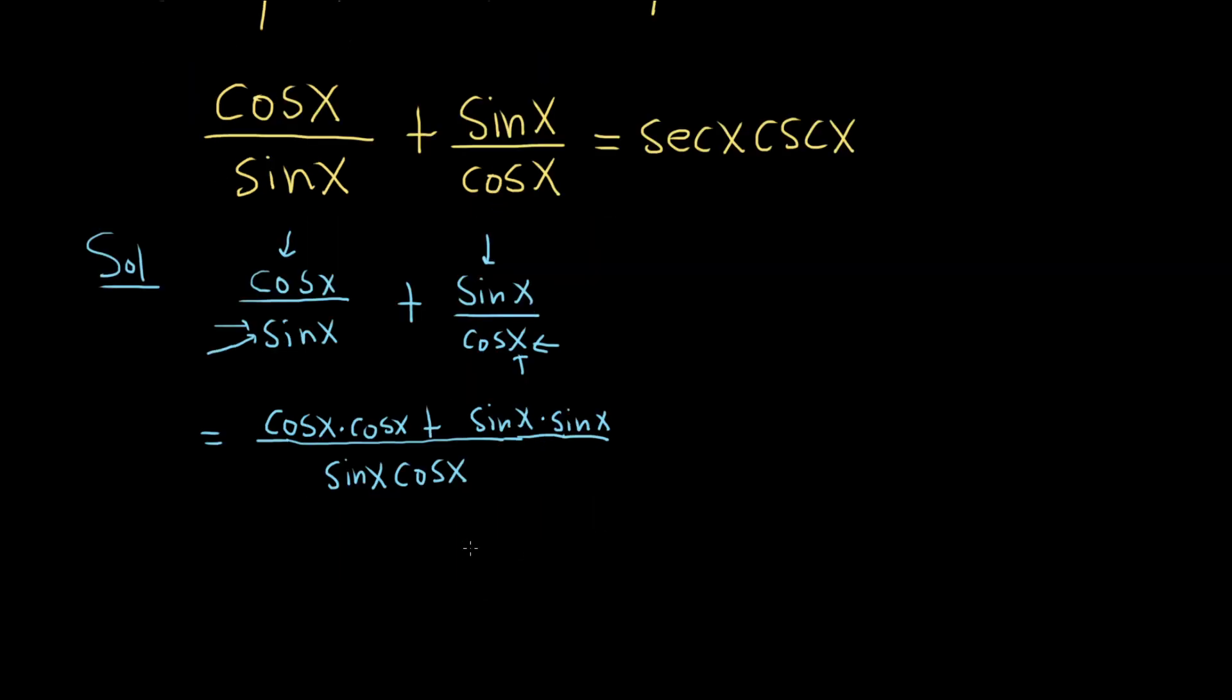This is going to be equal to, so cosine times cosine is cosine squared x, plus, and then sine times sine is sine squared x. It's all being divided by sine x, cosine x.